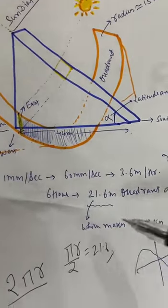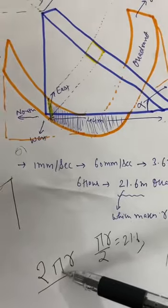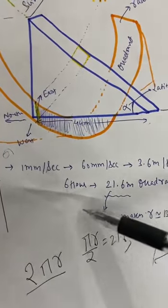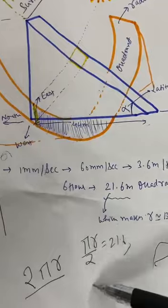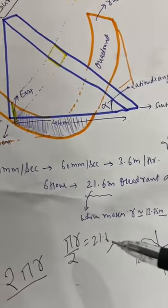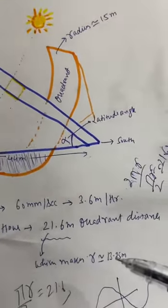Now, how is it calculated? We know the circumference of a circle is 2πr where r is the radius. For a quadrant, it is πr/2, which, if it equals 21.6, will become equal to 13.75 meters.